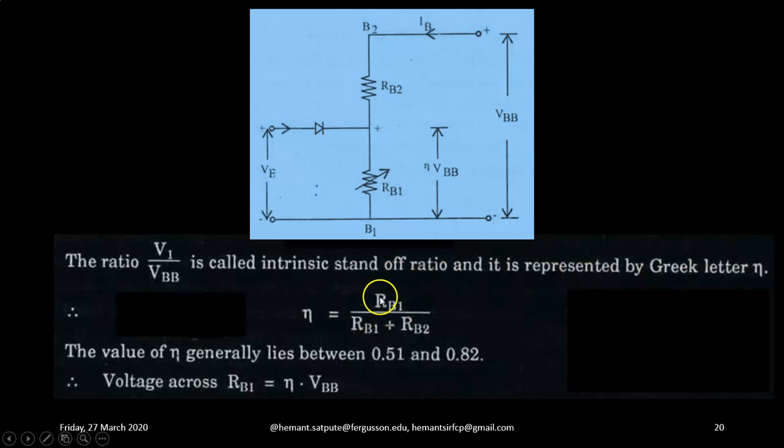So eta equals RB1 upon RB1 plus RB2 or RB1 upon RBB. So the value of eta generally lies between 0.51 to 0.82. Therefore the voltage across RB1 will be equal to simply eta times VBB, eta times the applied voltage.